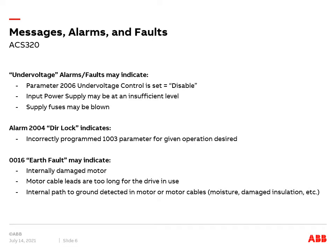Fault 16, Earth Fault, can be caused by a damaged motor, motor cables that are too long, or an internal path to ground detected in the motor or motor cables. This can be caused by moisture in the motor or damaged insulation. Moisture in the motor oftentimes causes numerous intermittent nuisance trips on earth faults.